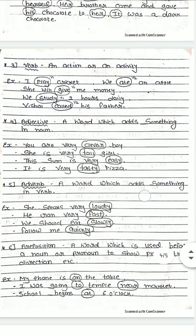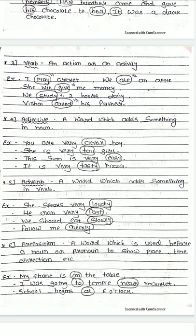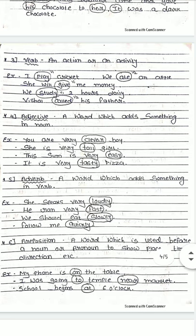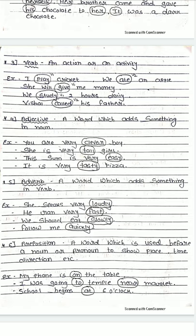Now adjective. Adjective is a word which adds something to a noun — aisa word jo noun mein kuch add karta hai. Example: 'You are a very clever boy' — boy is the noun, so clever is the adjective describing the boy. 'She is a very tall girl' — tall is an adjective. 'This sum is very easy' — easy is an adjective. 'It is a very tasty pizza' — tasty is an adjective. Any word that gives us extra information about a noun is called an adjective.